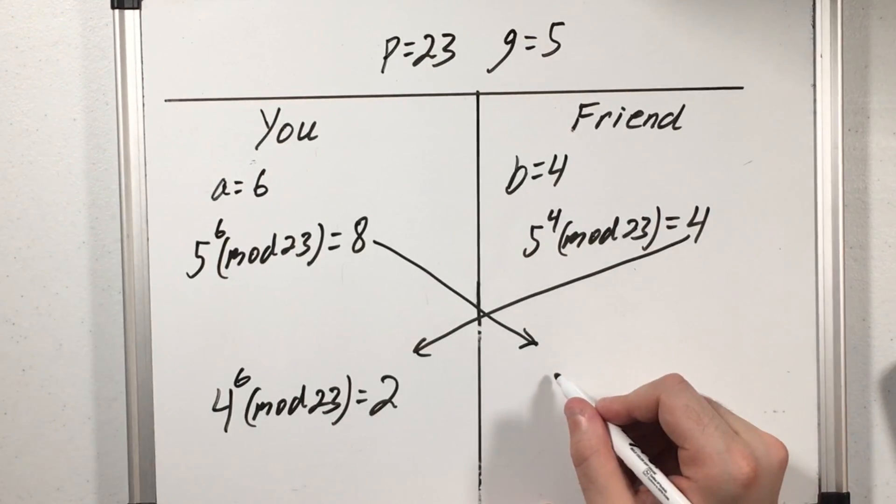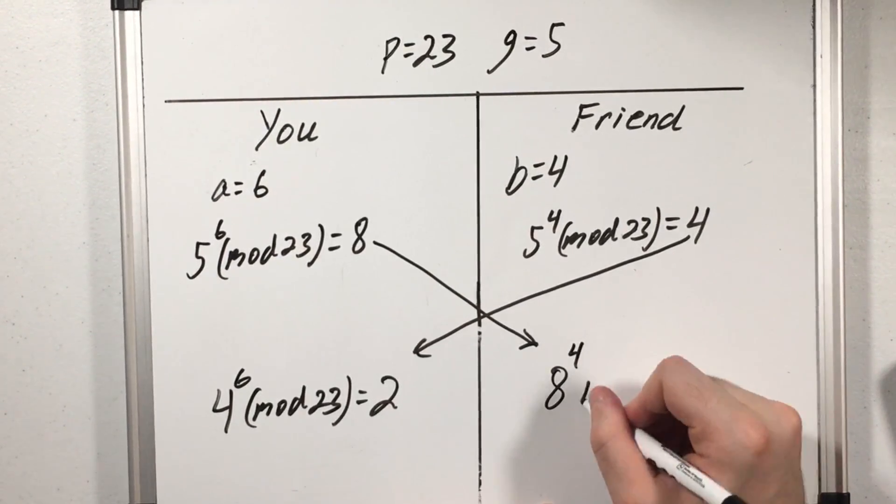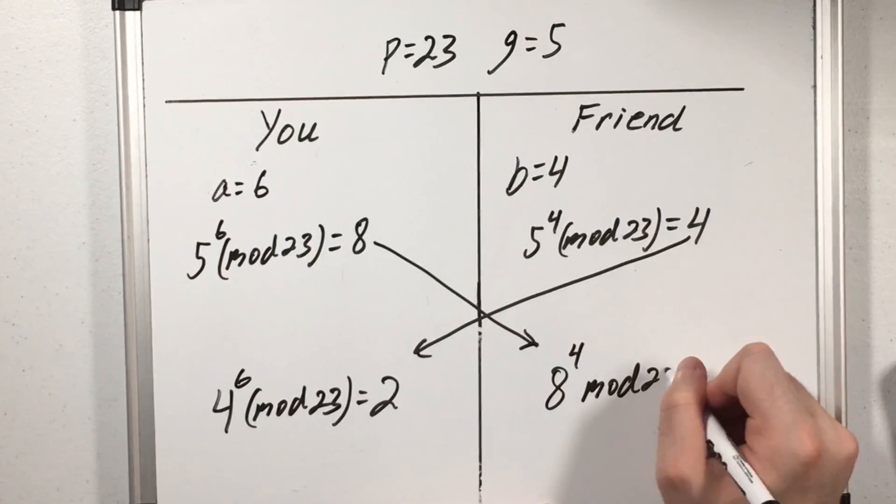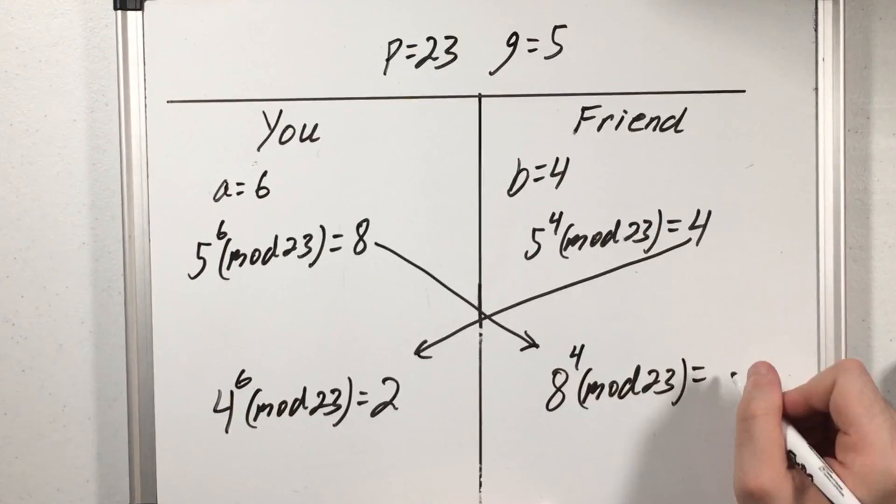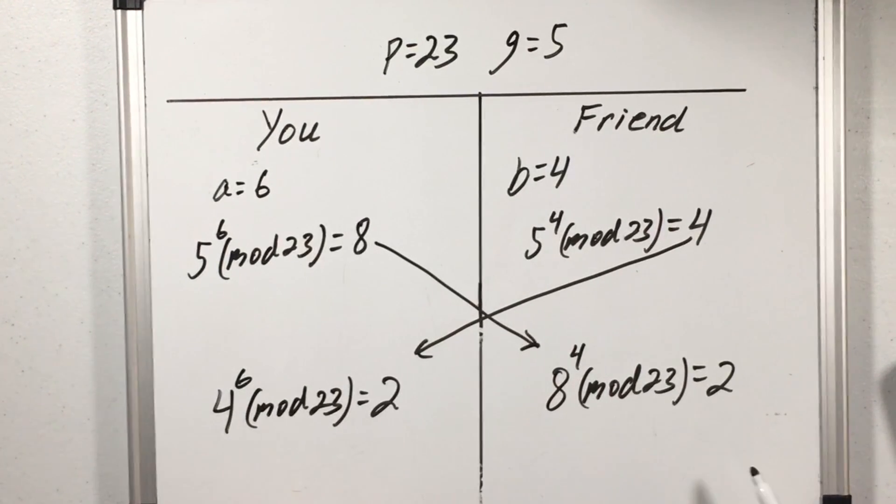Then my friend does the same thing. They take my value and raise it to their secret number of 4 doing this mod 23 will get them 2 which is the exact same thing that I got and this wasn't an accident.